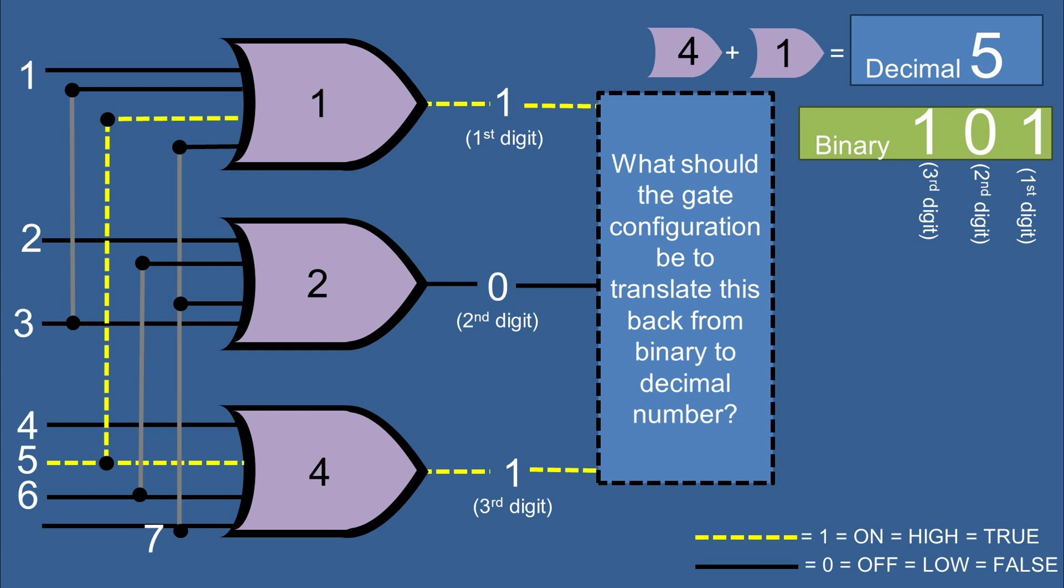Last video we took this logic gate configuration to translate from a decimal number 5 to a binary 101. In this video we want to connect a logic gate configuration to translate the binary 101 back into a signal that could be thought of as a 5 in decimal.